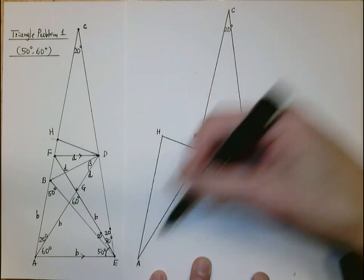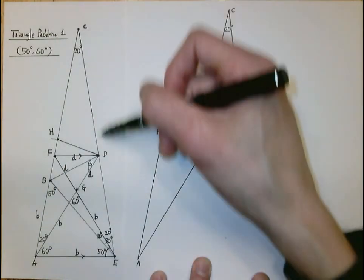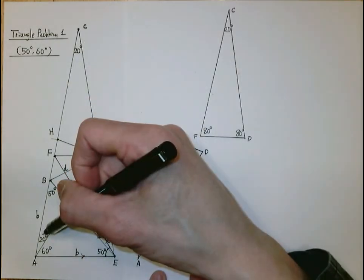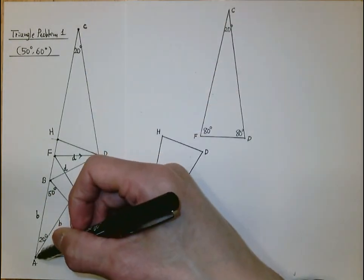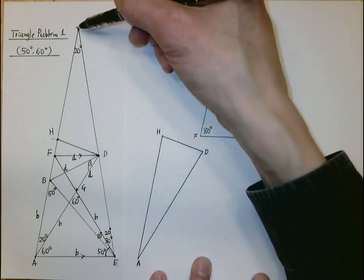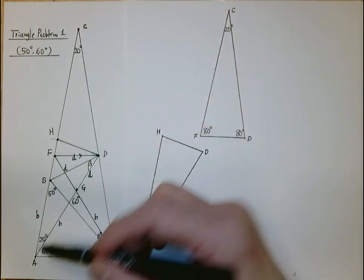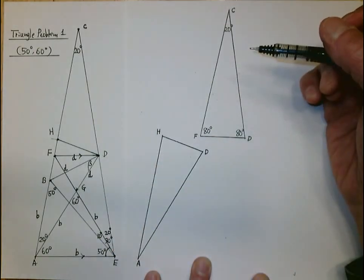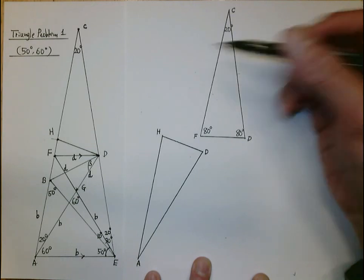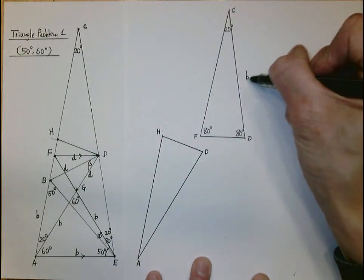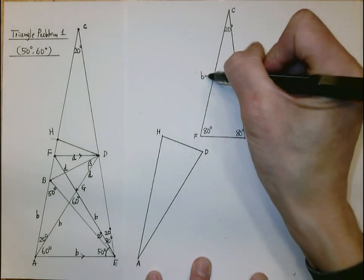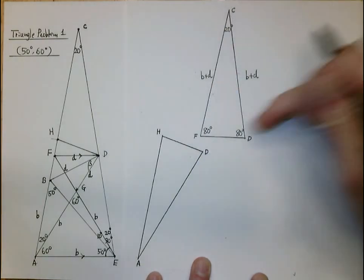Now looking at the big triangle ACD: the angle at A is 20 degrees and the base angle at D is 20 degrees, so it is isosceles with AD congruent to DC. Since AD equals b plus d, then CD is also b plus d. For triangle ADH: the construction gives AD = AH, so it is isosceles with both base angles equal to 80 degrees. Since AD = b + d, we also have AH = b + d.